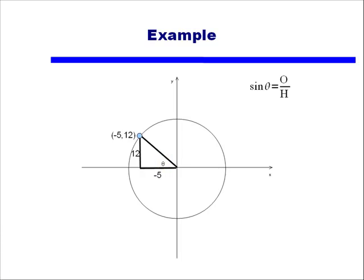And I know if my point is negative 5 comma 12, that means my value for x, on the adjacent leg of that angle theta, is negative 5, and the side opposite, the y value will be positive 12.